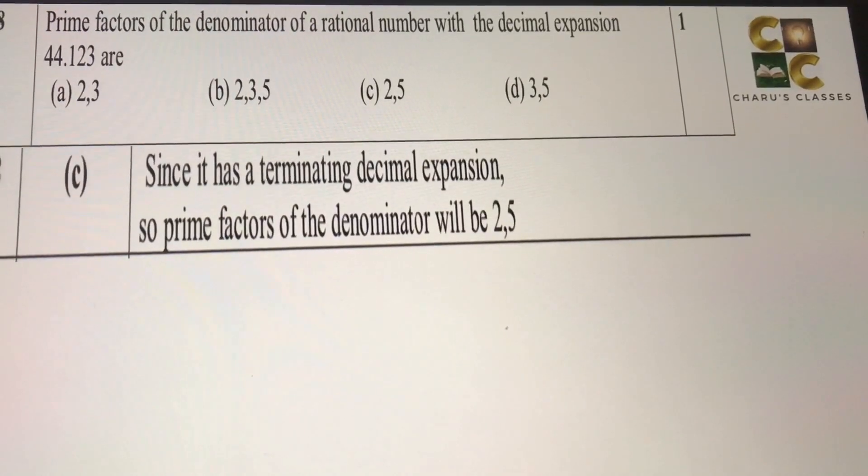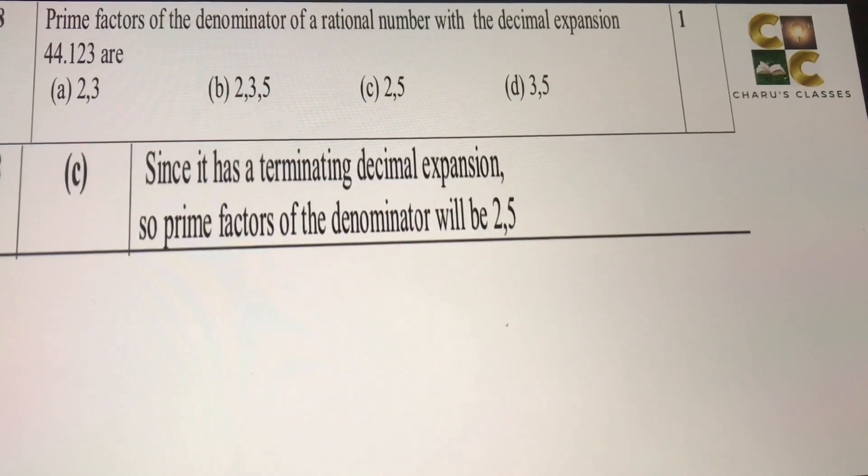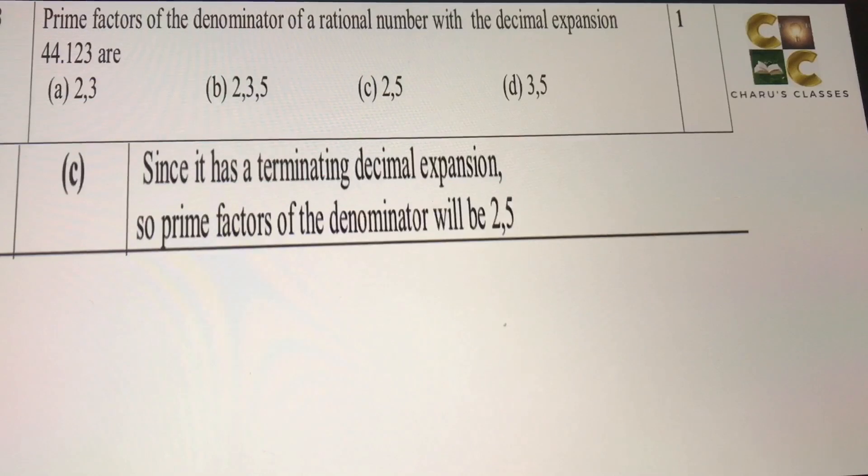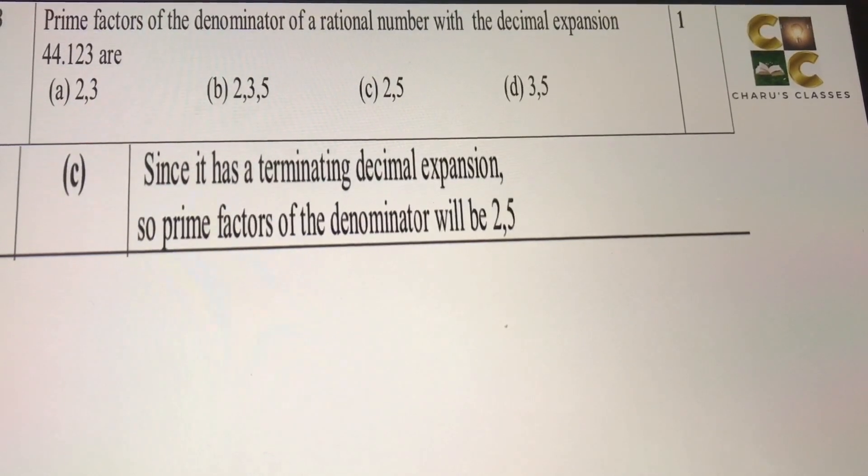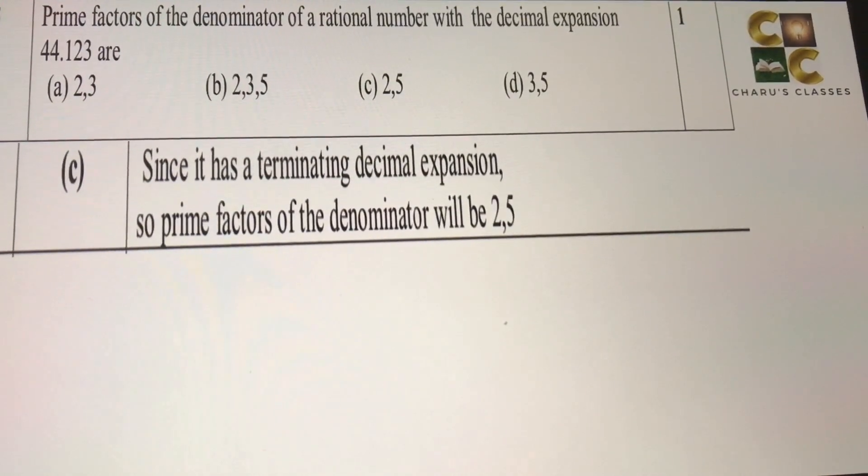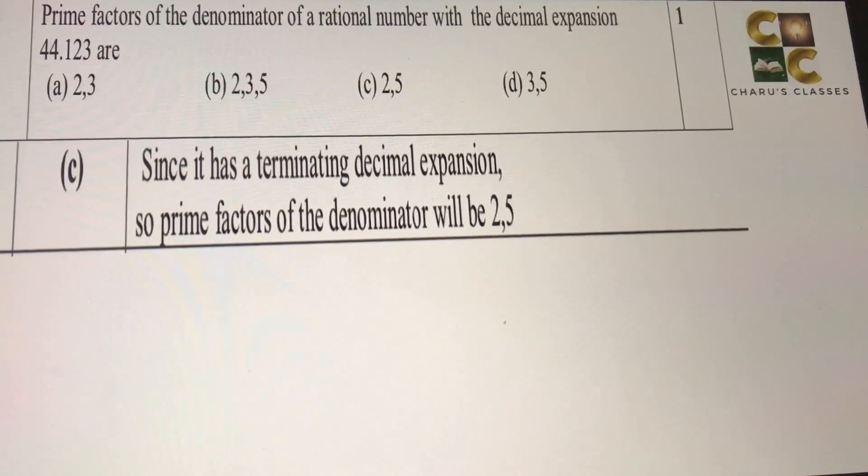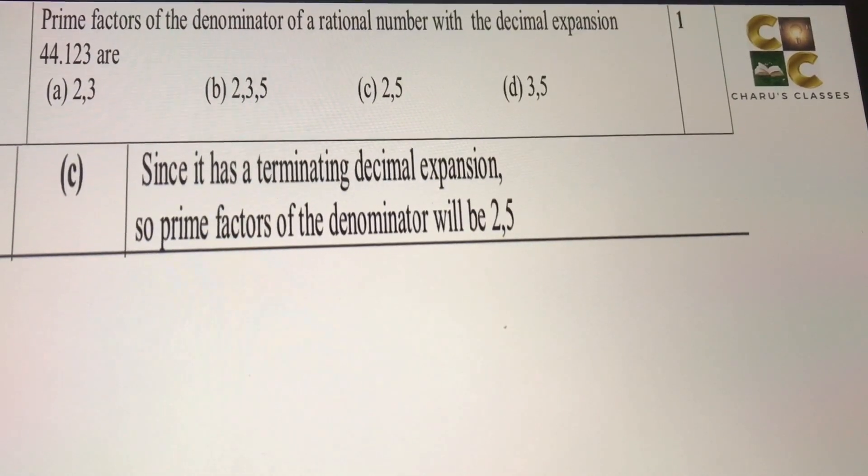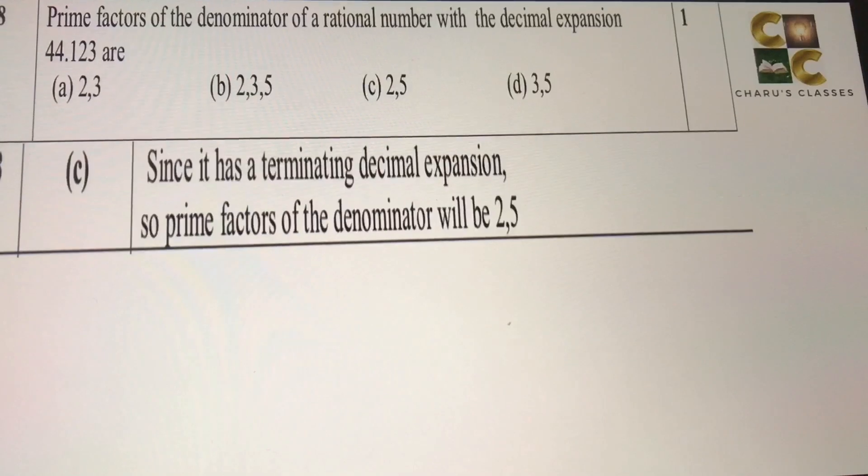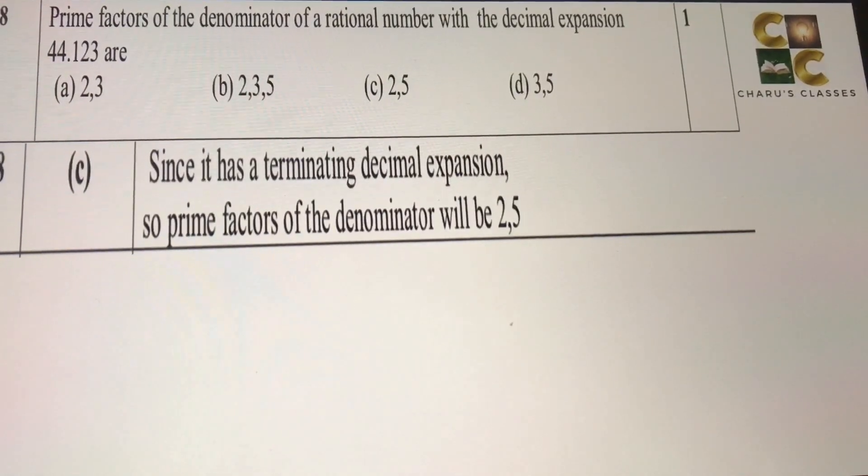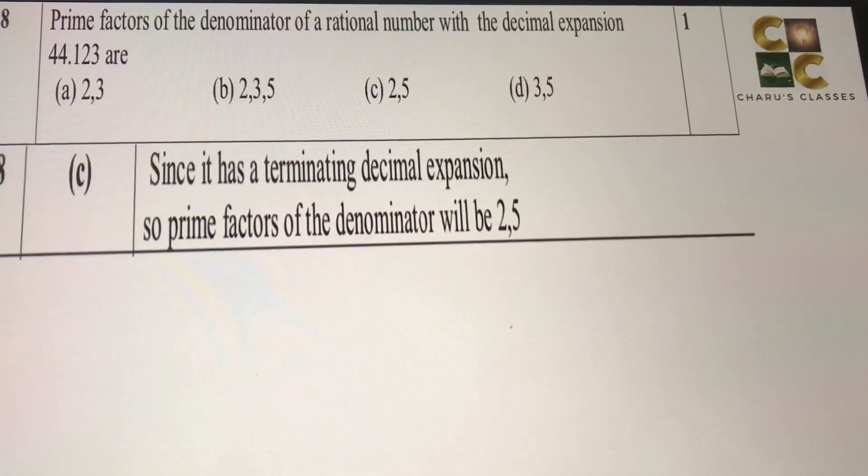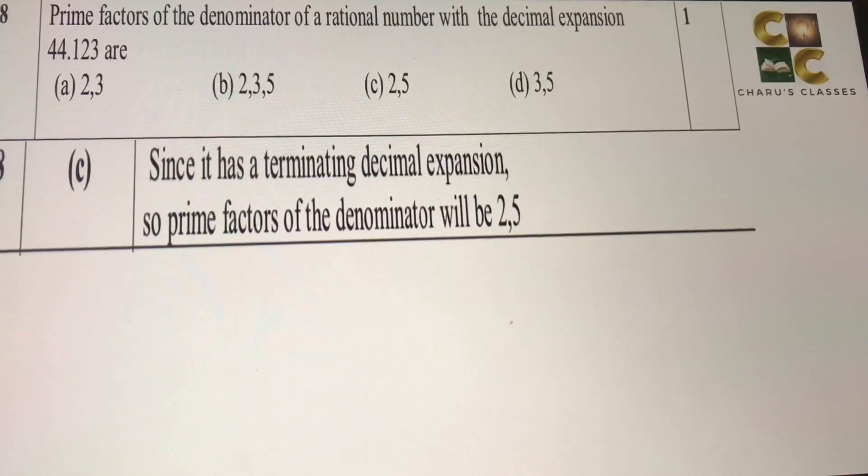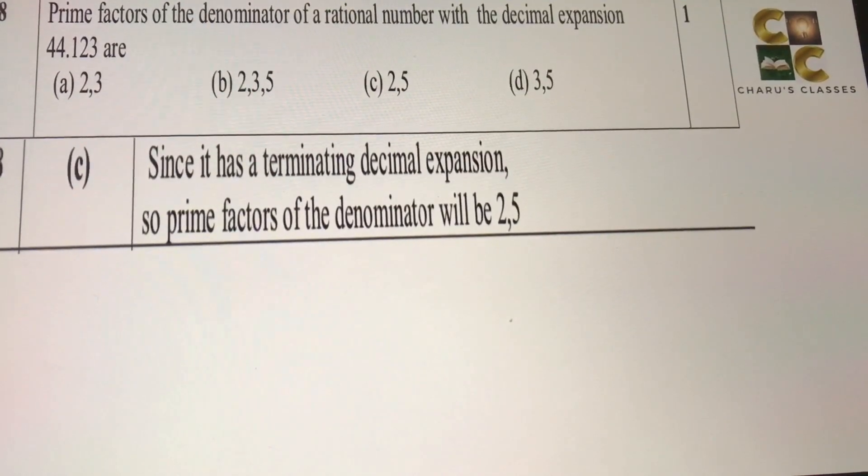Eighth question: prime factors of the denominator of a rational number with the decimal expansion 44.123 are. So 44.123, it is a terminating decimal expansion. It is not continuous, there's no bar. So it is a terminating decimal expansion. If any decimal is a terminating decimal expansion, its denominator always has prime factors of 2, 5, or both 2 and 5. Nothing else should be there. So the correct answer here is 2, 5, that is C.